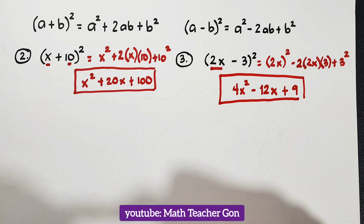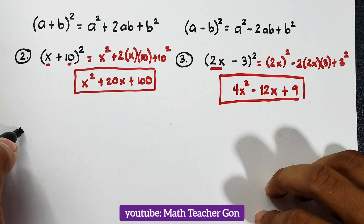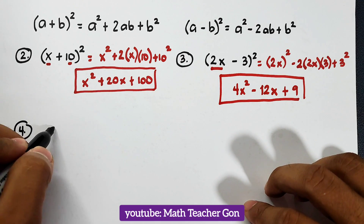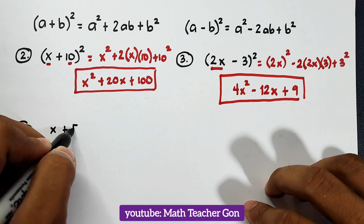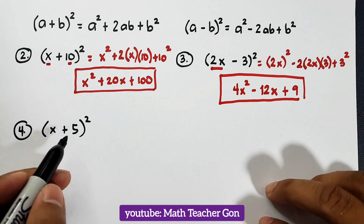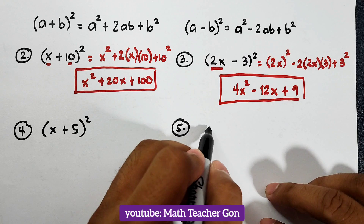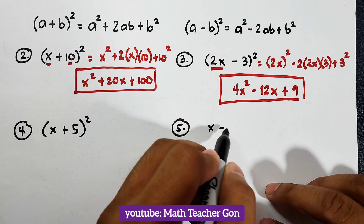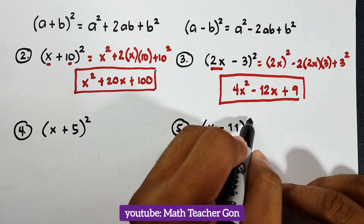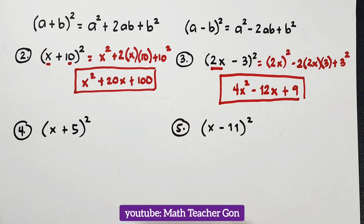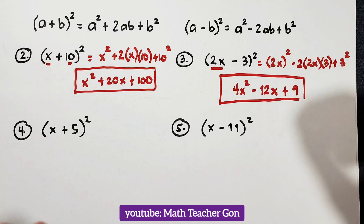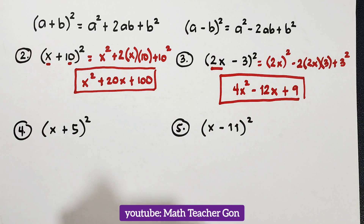I hope you learned something from this video. For your assignment, number four is x plus 5 squared and number five is x minus 11 squared. I hope to see your answers in the comment section. If you're new to my channel, don't forget to like and subscribe and hit the bell button to be updated on our latest uploads. Again, it's me, Teacher Gonin — maraming salamat, bye bye!